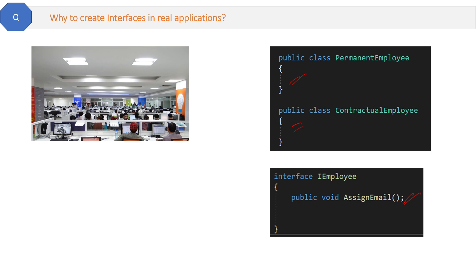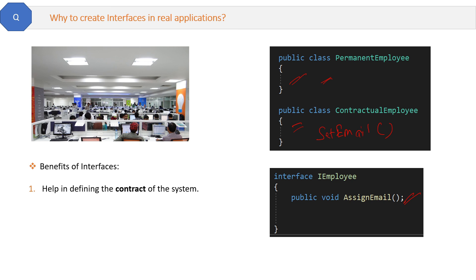The reason we declare methods in interfaces is to maintain consistency. Otherwise one developer will create 'assign email' in permanent employee and another developer will create 'set email' in contractual employee. Both methods may do the same thing, but since their names are different they create inconsistency. Interfaces help in defining the contract of the system and maintaining consistency.